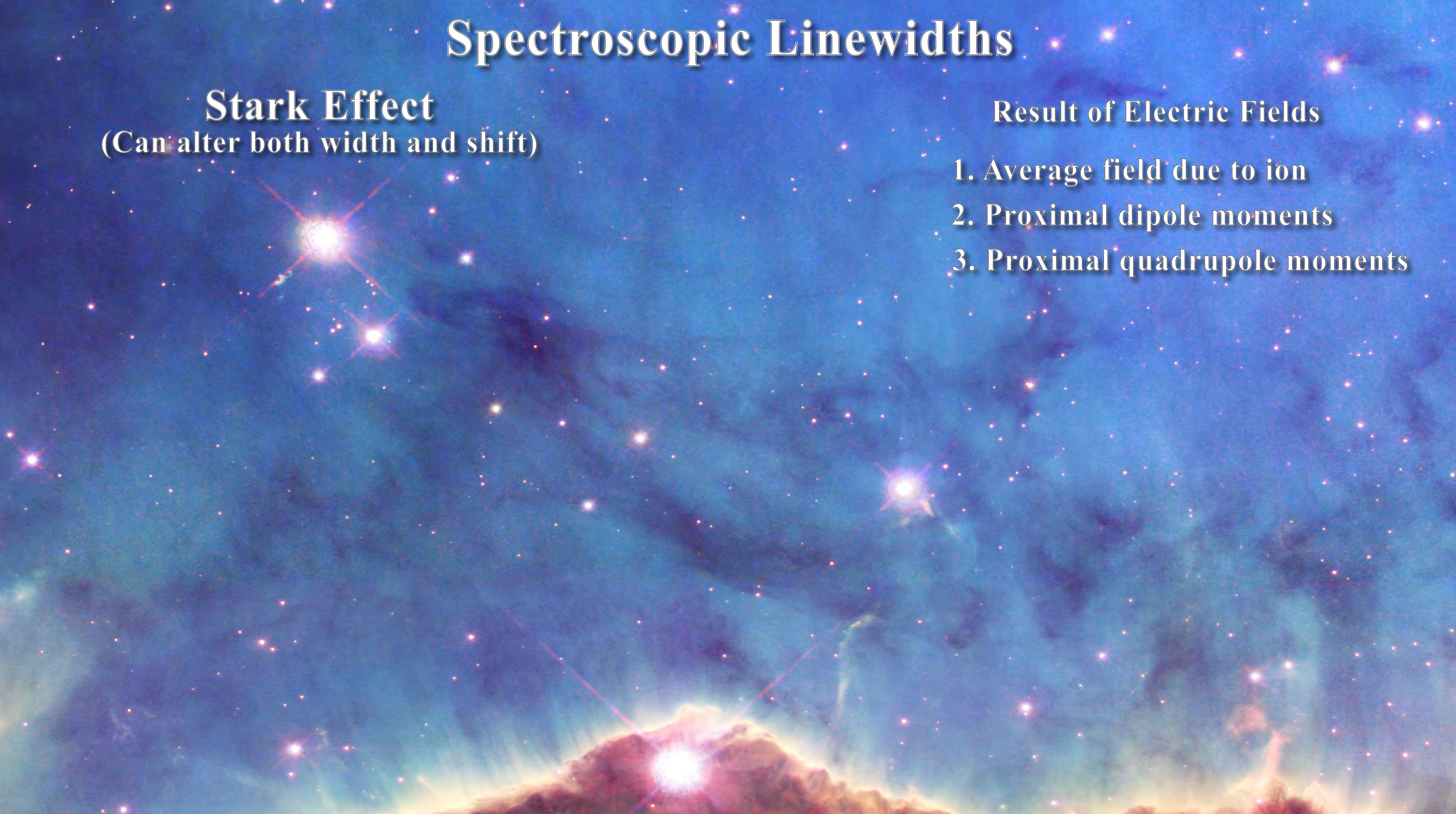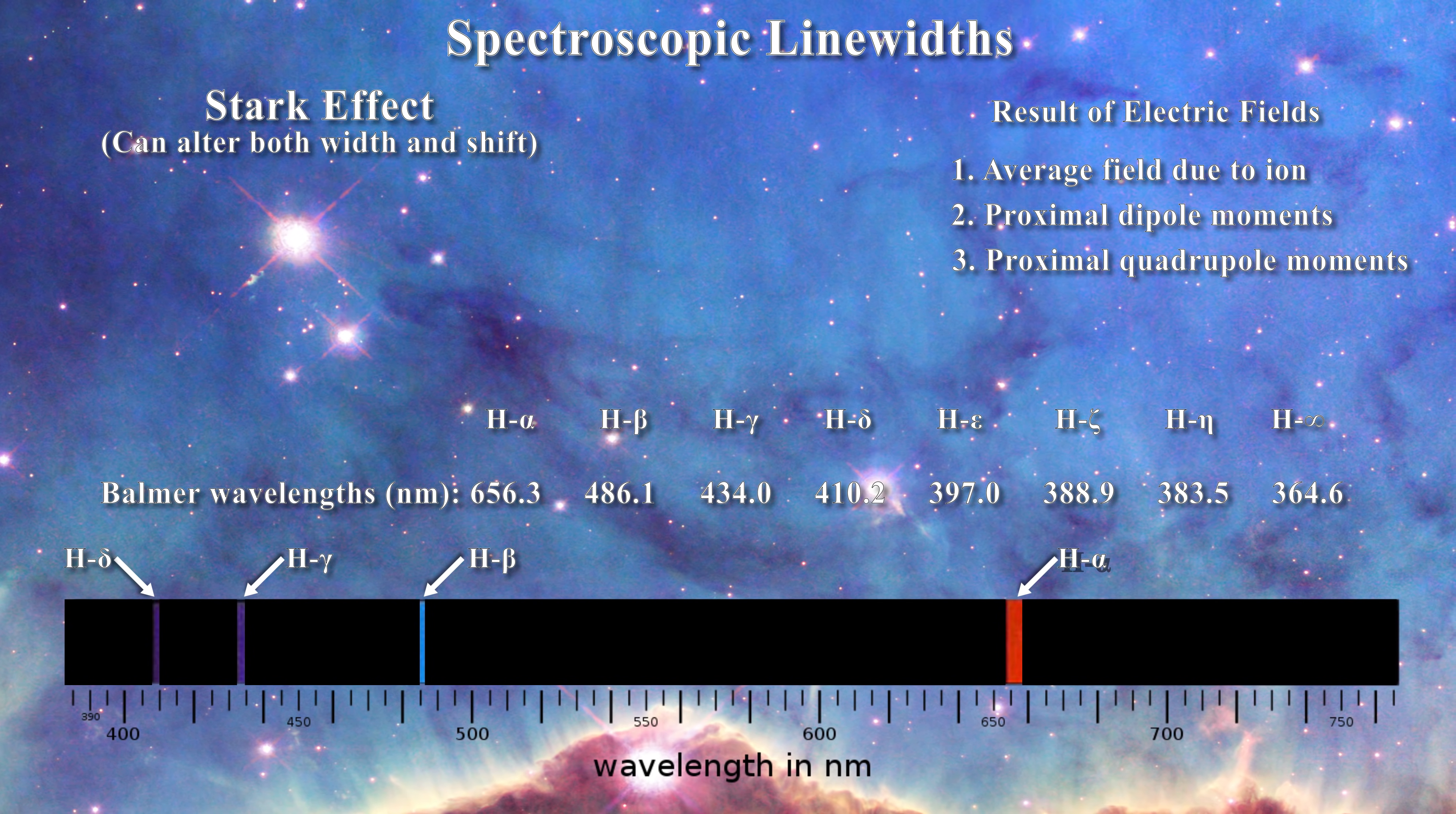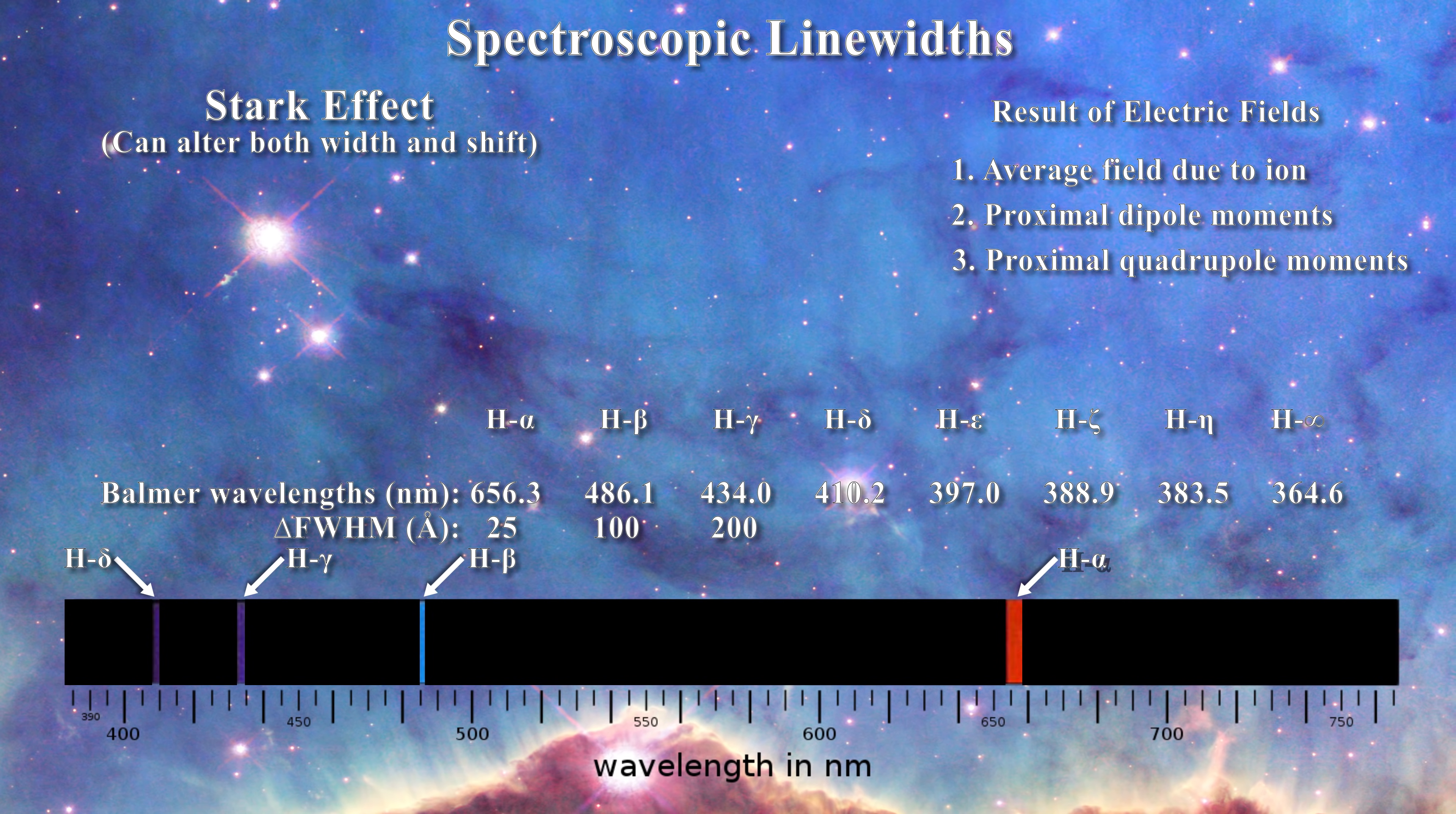First, it is well known that the hydrogen Balmer lines can experience profound linear Stark effects in the laboratory. For instance, at the beginning of the last century, it was reported that when hydrogen, at a pressure of about 2 atmospheres, was subjected to a high voltage arc discharge, the Balmer lines experienced profound asymmetric line broadening. The widths of the hydrogen alpha, beta, and gamma lines increased by 25, 100, and 200 angstroms. That was a linear effect. And so hydrogen Balmer lines have long been known to experience profound linear Stark broadening.